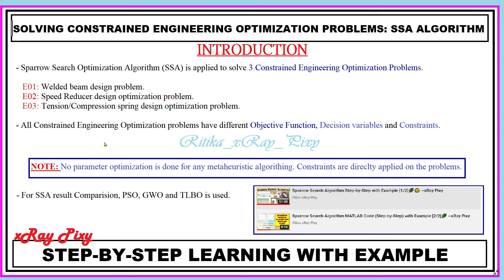No parameter optimization is done, so we will apply the constraints directly on the problem — constraints are directly handled. If we get any solution that is not satisfying the constraints, it is considered an infeasible solution and we will abandon it. If the solution satisfies the constraints, we accept it and consider it a feasible solution.